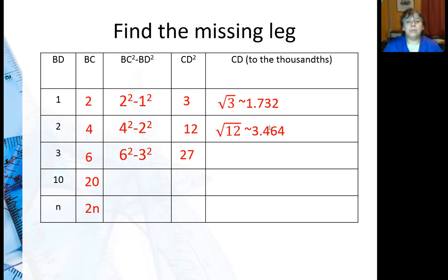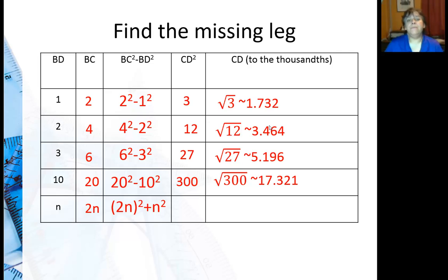6 squared minus 3 squared is 27, square root of 27. 20 squared minus 10 squared is going to be 300, because you have 400 minus 100 is 300.